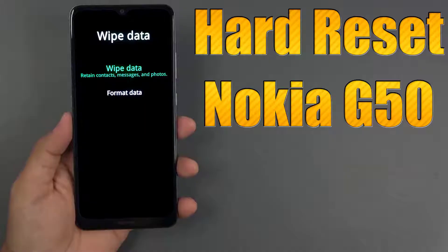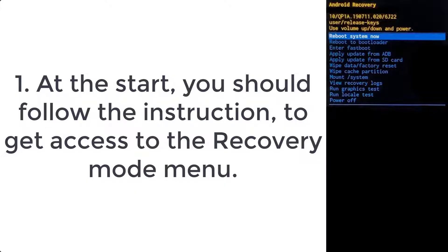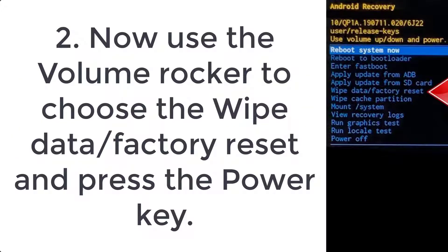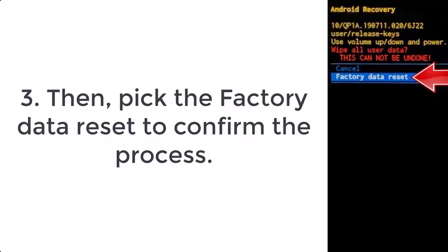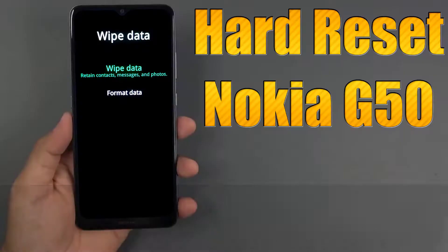How to hard reset Nokia G50. Step 1: follow the instructions to get access to the recovery mode menu. Step 2: use the volume rocker to choose Wipe Data / Factory Reset and press the power key. Step 3: pick Factory Data Reset to confirm the process.